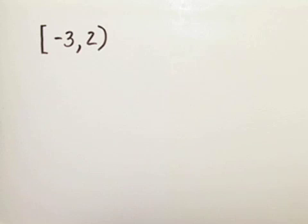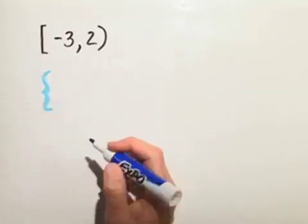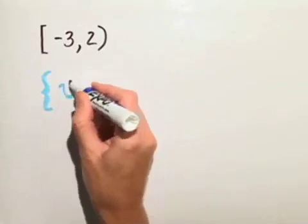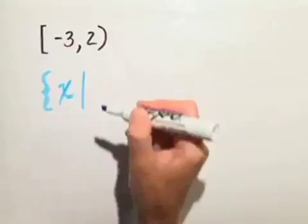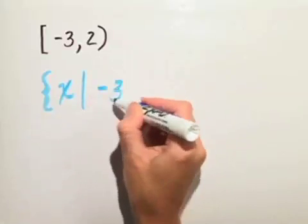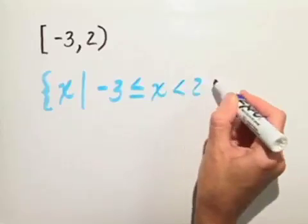So, in order to write this in set builder notation, we write a brace, which means we're starting the set of all x such that negative 3 is less than or equal to x, which is less than 2.